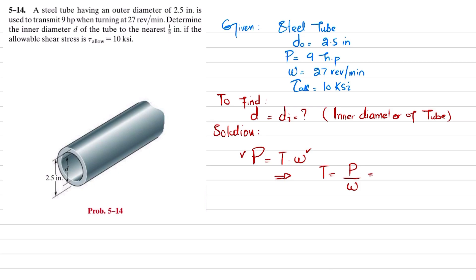Now power is in 9 horsepower, so we will convert it into radian per second. So power is 9 multiplied by 550 to convert it into pounds, divided by 27 revolutions per second.